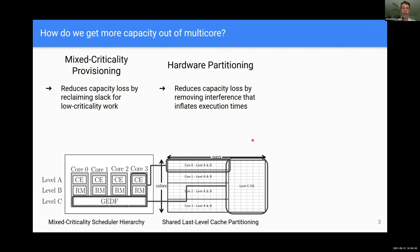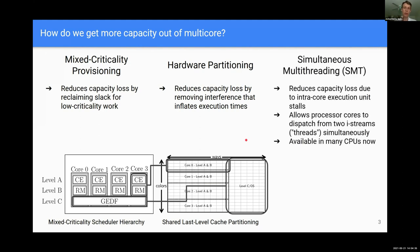A third way to get more capacity out of multi-core is via simultaneous multithreading, or SMT — Intel calls this hyper-threading. This reduces capacity loss due to intra-core execution unit stalls by allowing processor cores to dispatch from two instruction streams simultaneously. This is available in many CPUs, not just x86; ARM has designs coming, and there are various PowerPC designs from IBM.